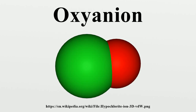A polyoxoanion is a polymeric oxoanion in which multiple oxoanion monomers, usually regarded as polyhedra, are joined by sharing corners or edges. When two corners of a polyhedron are shared the resulting structure may be a chain or a ring. Short chains occur, for example, in polyphosphates.